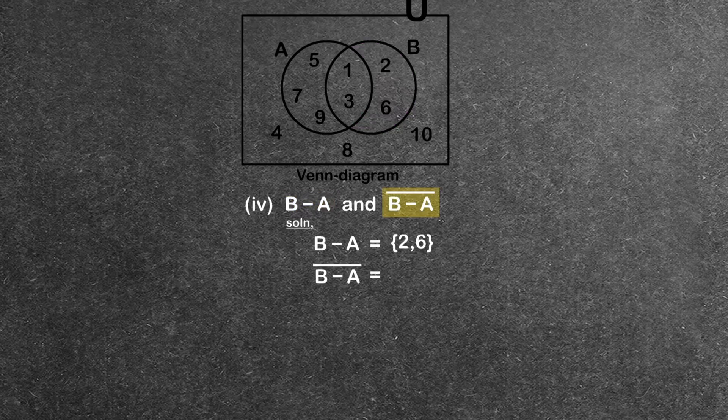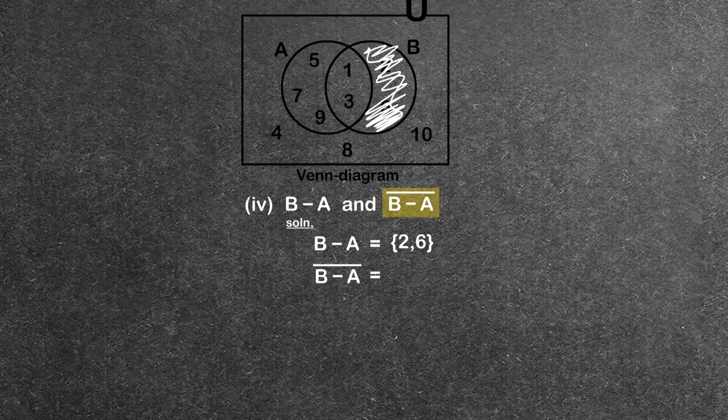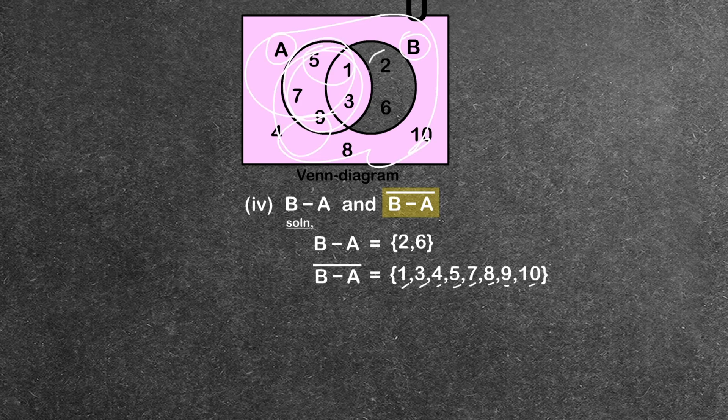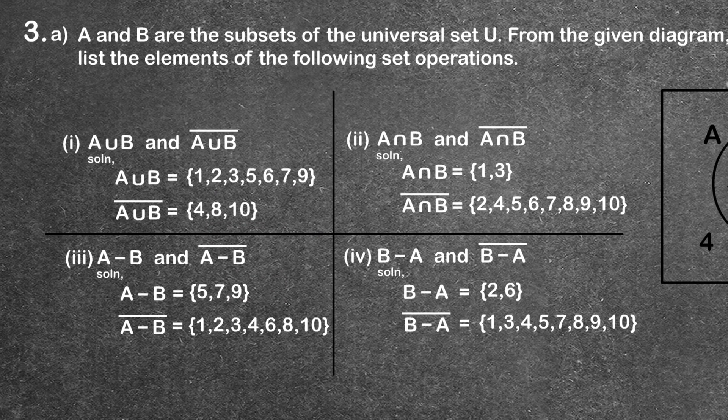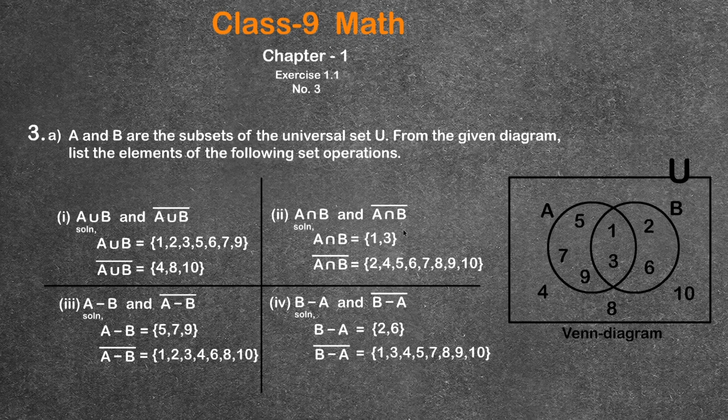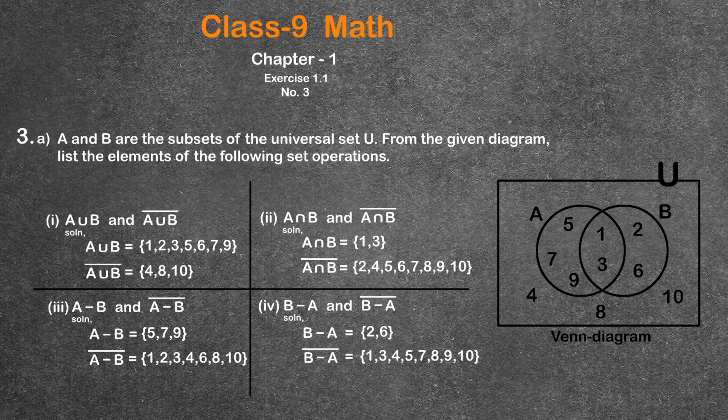Finally, (B−A)', the complement of B minus A. The universe minus {2, 6} gives us 1, 3, 4, 5, 7, 8, 9, 10. And that completes our number 3. We are going to repeat and review. Good luck.